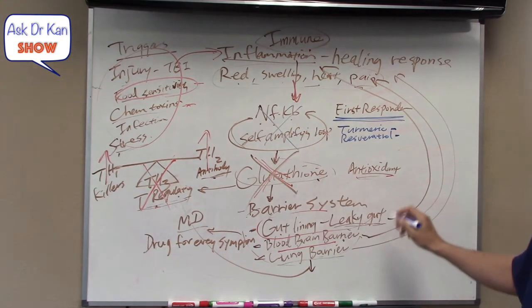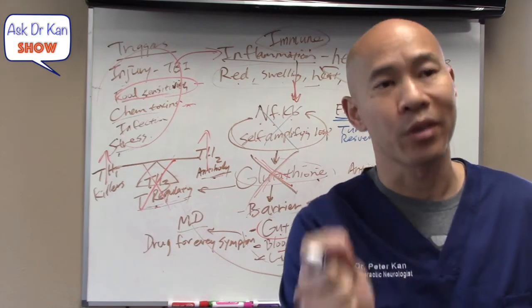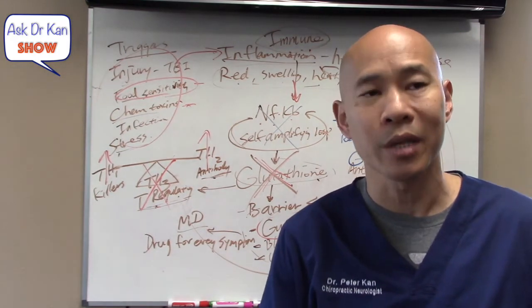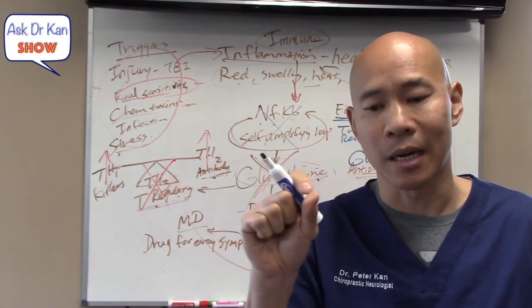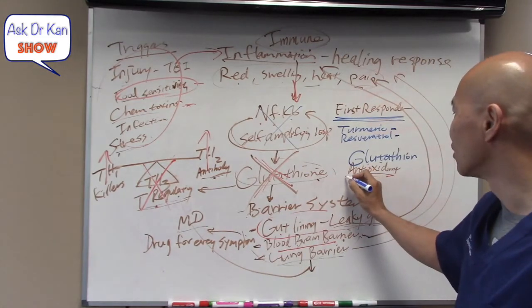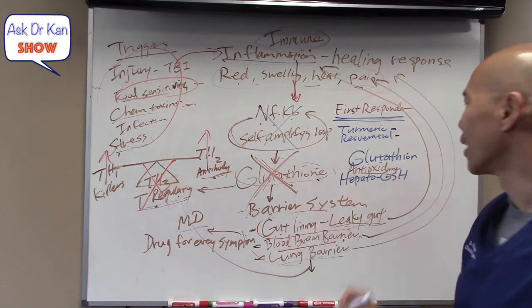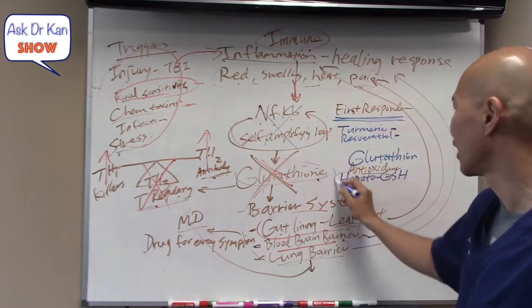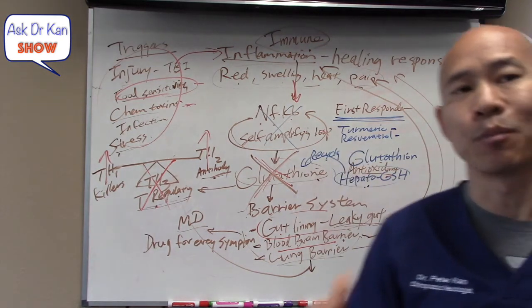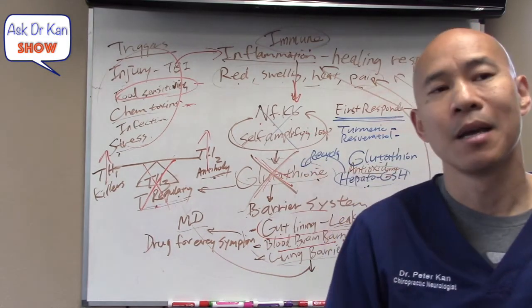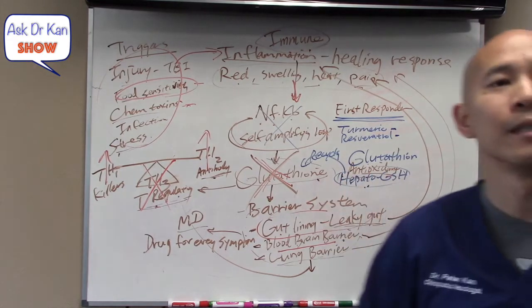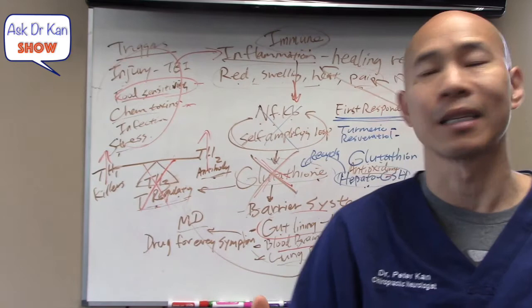At the glutathione level, you want to take glutathione specifically — either liposomal glutathione or acetyl glutathione. Another product we use is called Hepato-GSH, which helps your body recycle glutathione. Your body naturally can recycle it, but that process is time-dependent and energy-dependent. Hepato-GSH contains ingredients that supply the cofactors needed to speed up the glutathione recycling system, so that can help here.